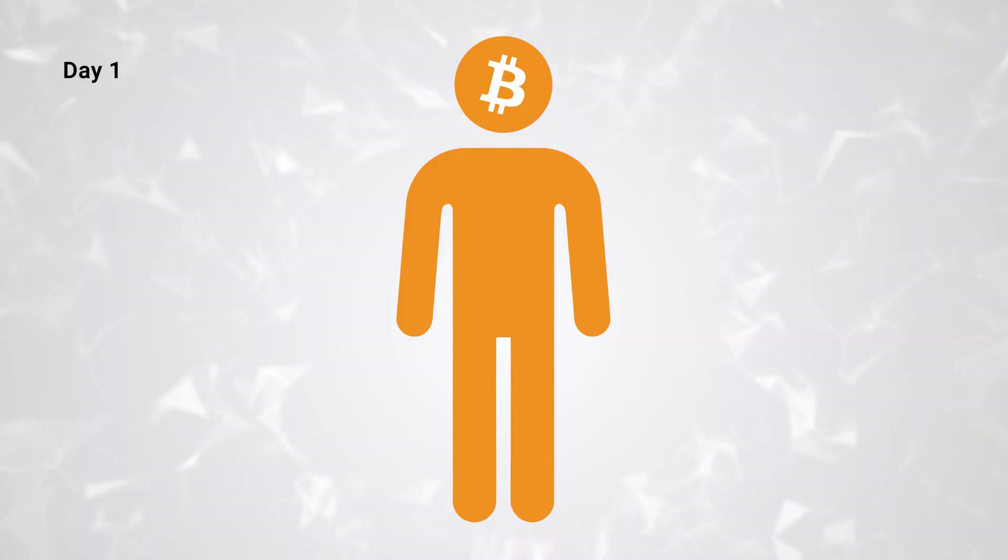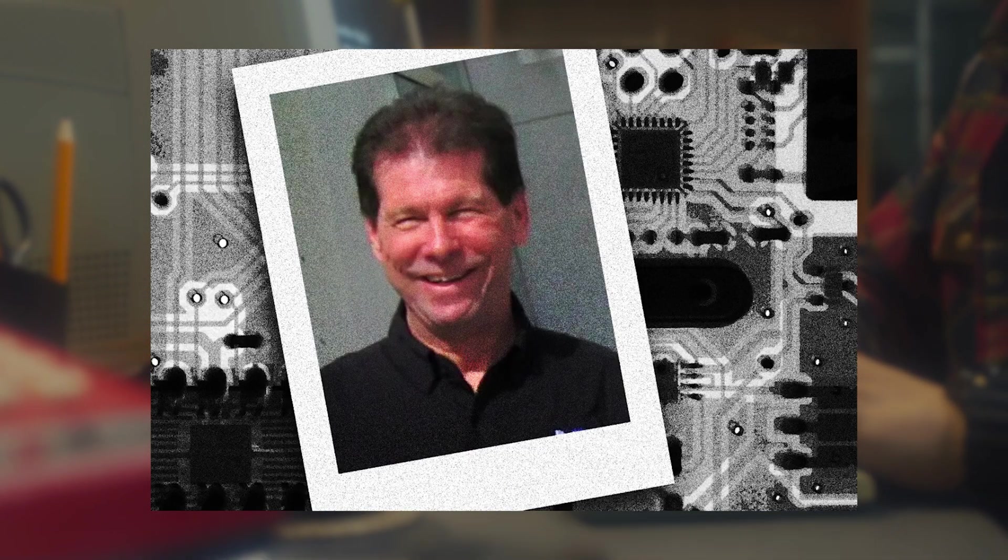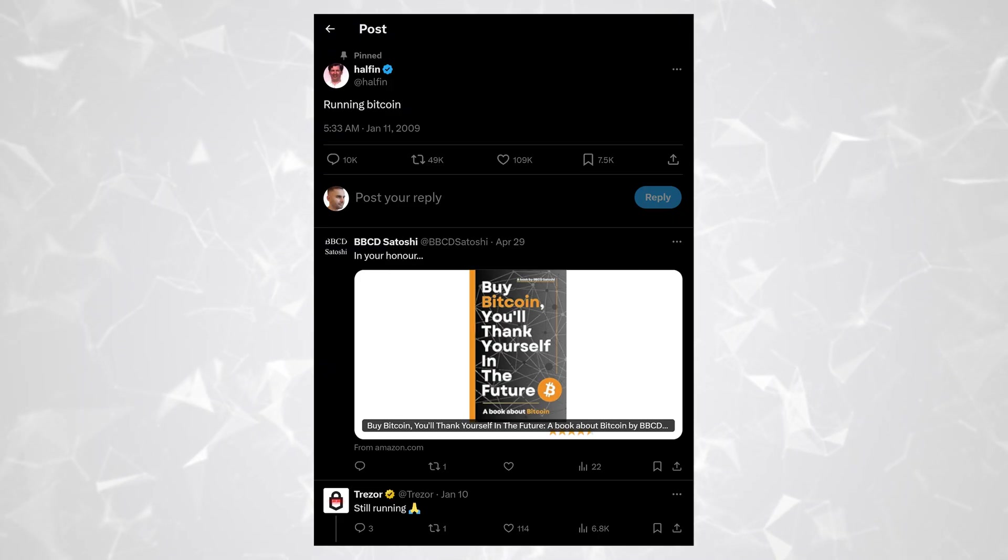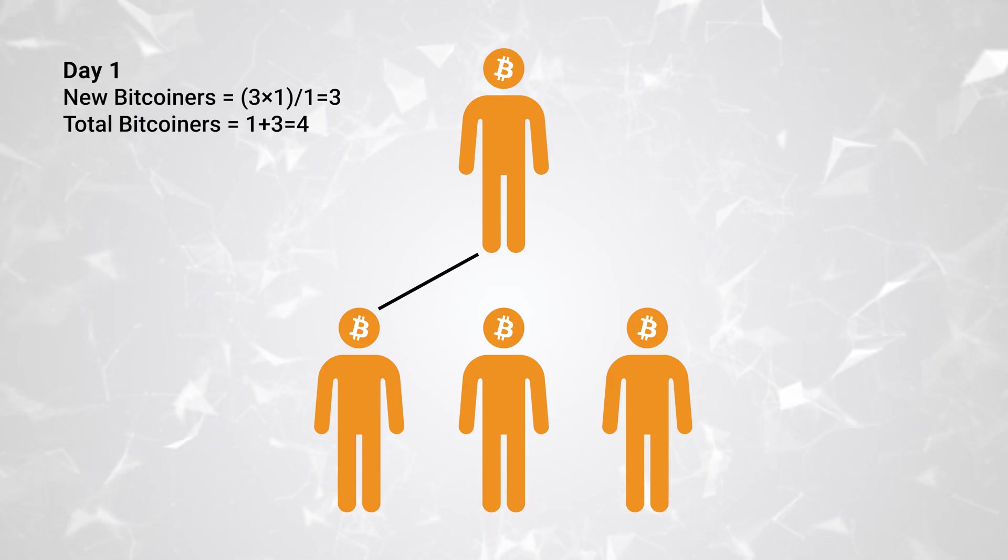Day 1. It all starts with Satoshi sending Bitcoin version 0.1 to the cryptography mailing list, introducing 3 people to Bitcoin by the end of day 1. To calculate how many new Bitcoiners are added each day, we use a simple rule. We multiply the number 3 by the total number of Bitcoiners and divide it by the current day number. Since it's day 1, dividing by 1 doesn't change anything, so we end up with 3 new Bitcoiners. By the way, who do you think this user is? Well, it's the legendary Hal Finney, who played a big part in Bitcoin's early history. He also made the first Bitcoin transaction with Satoshi, creating the first link. Now for the other links. The calculation is more complicated, but we are going to simplify it by using the limit case for a large number of nodes, according to which the links are equal to the square of the nodes. Therefore, the number of links is 16.